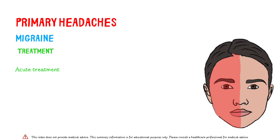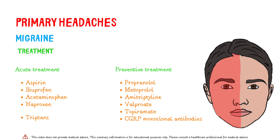Our aim in acute treatment is to relieve pain by minimizing side effects. Simple analgesics are recommended for mild to moderate migraine attacks. Triptans are recommended for moderate to severe migraine attacks. Alternative options include CGRP antagonists, lasmiditan, antiemetic drugs, and dihydroergotamine. Evidence for non-pharmacological methods such as cold neck wraps, acupuncture, and oxygen therapy is limited. The aim of prophylactic treatments is to reduce the frequency and severity of migraine, improve response to acute treatment, and reduce the risk of neurological deterioration.